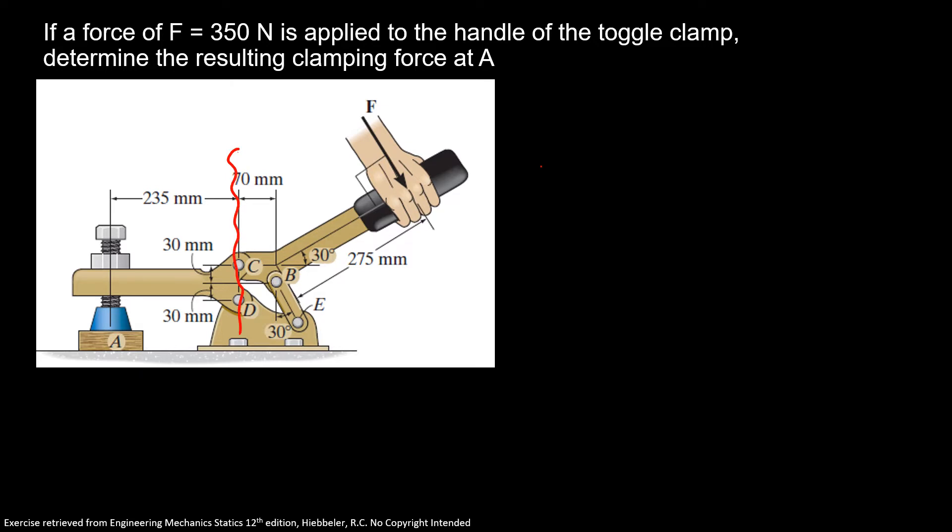So here we're gonna break our problem in two parts. The first part, you're gonna see our point C, and then here we're gonna have one member force, the force BE, and here we're gonna have our force of 350 newtons, as our problem told us, and then we're gonna have a 30 degree angle that I'm gonna show with more detail next slide.